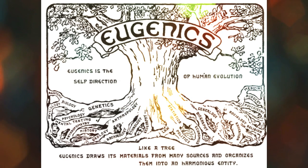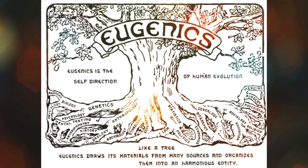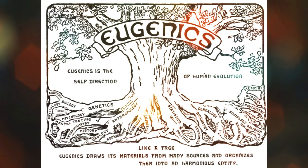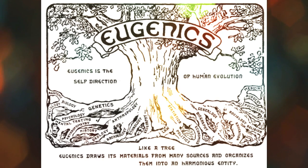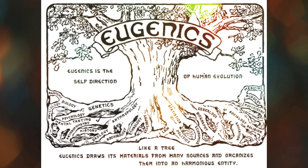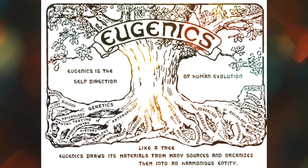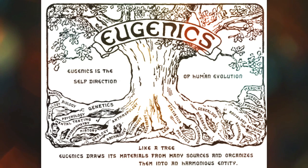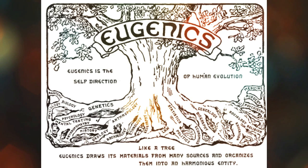Most of the sterilized people were German citizens living in asylums. It was not an easy task for the German government to convince people about the eugenic program. As a result, they used propaganda movies to persuade the general public. Those who were suffering from hereditary illnesses were labeled through these movies as useless eaters, ballast existences, life unworthy of life, and beings of lesser worth.